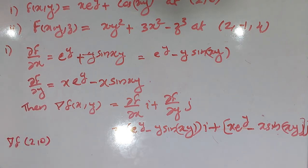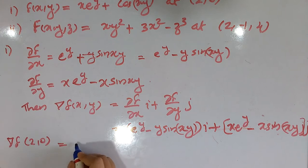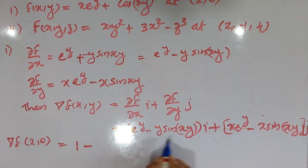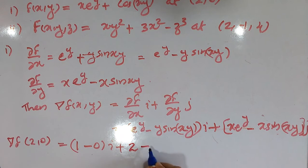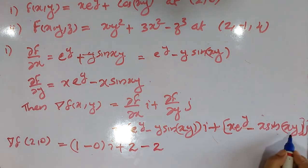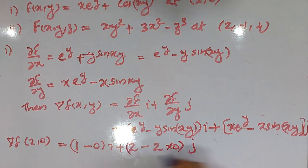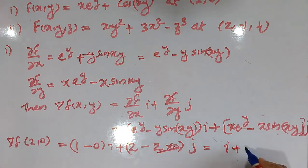Now we substitute the point (2, 0): del f at (2, 0) equals e raised to 0 gives 1, so we get 1 times i plus 2 e raised to 0 minus 2 sin(0) times j, which simplifies to i plus 2j. So del f at (2, 0) equals i plus 2j.